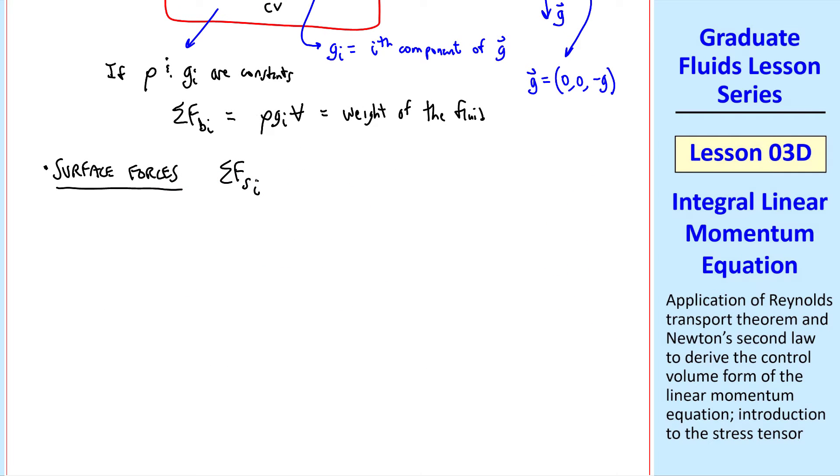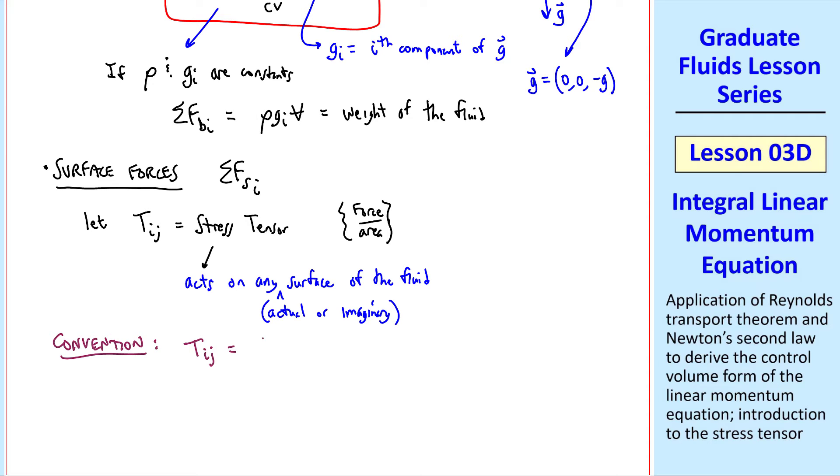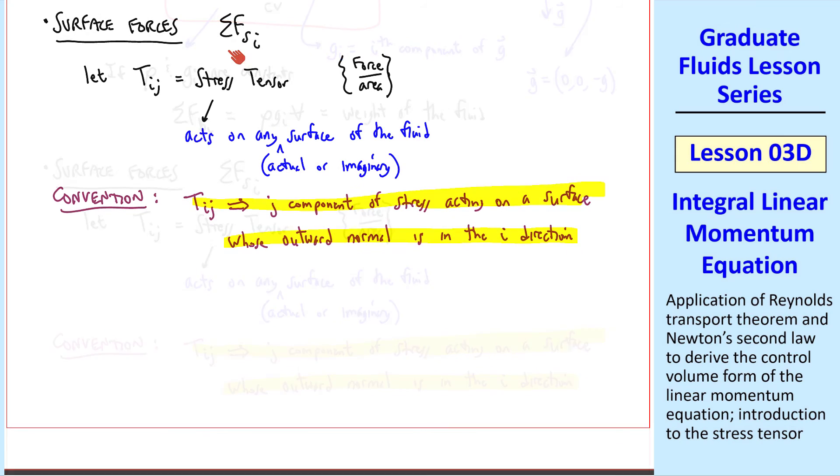Now let's look at the surface forces, sigma fsi. We define the stress tensor, which has dimensions of force per area, as tij. This tensor acts on any surface of the fluid, and this surface can be an actual surface or an imaginary surface, just cutting through the fluid. The convention for this stress tensor is that tij is the j component of stress acting on a surface whose outward normal is in the i direction. This is the convention we'll use for all our work. So let's derive an expression for sigma fsi.